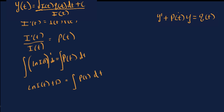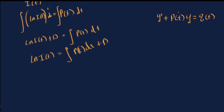Subtracting the constant from both sides gives us the natural log of i(t) on the left, and the integral of p(t) dt on the right. We'll do the same thing we did with the general solution constant and absorb that minus sign, making it plus d. Now we exponentiate both sides to get rid of the natural log, leaving i(t) on the left and e raised to the integral of p(t) dt plus d on the right.